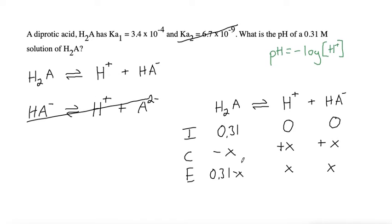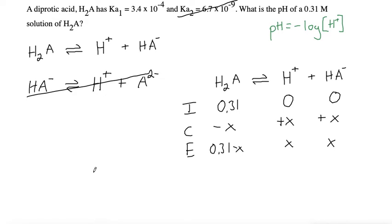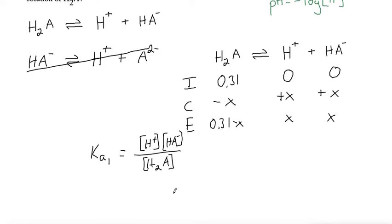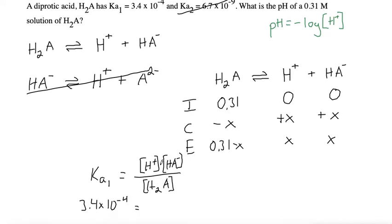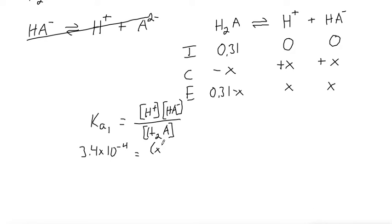Now we can write our Ka equation. Ka1 in this case would equal the concentration of H+ times the concentration of HA- divided by the concentration of H2A. Plugging in the number, which is 3.4 times 10^-4, equals H+ concentration which is x, HA- is also x, and H2A is 0.31 minus x.